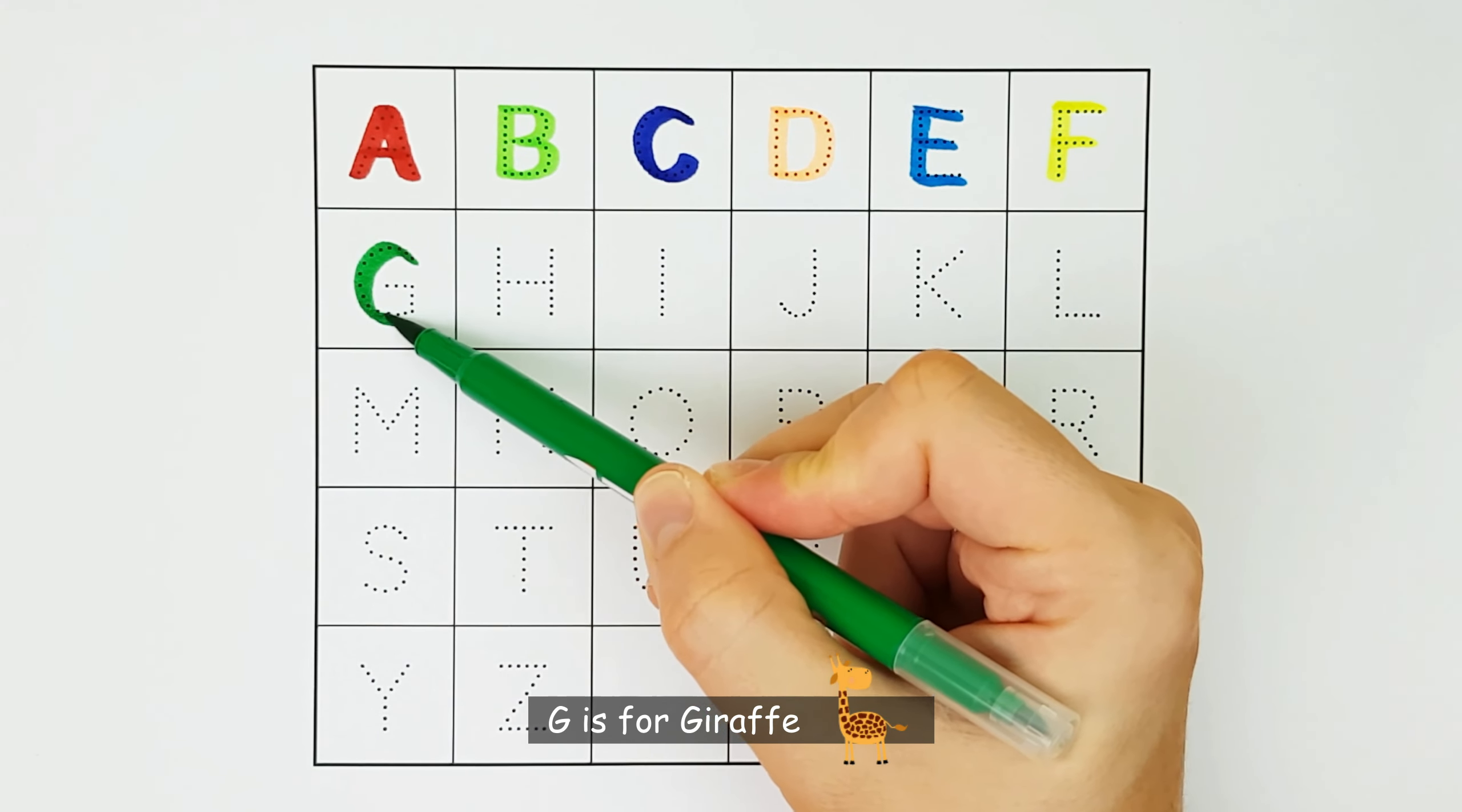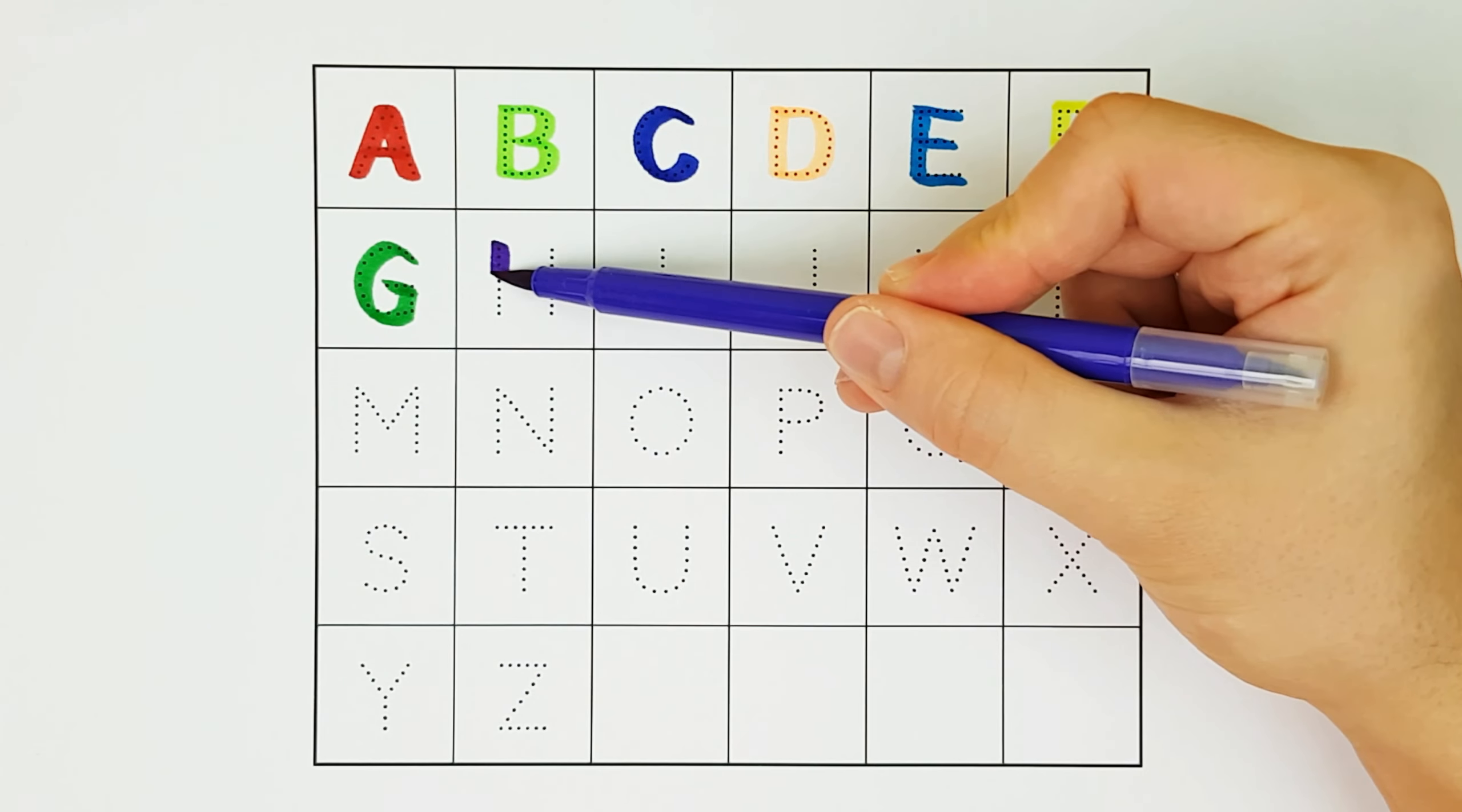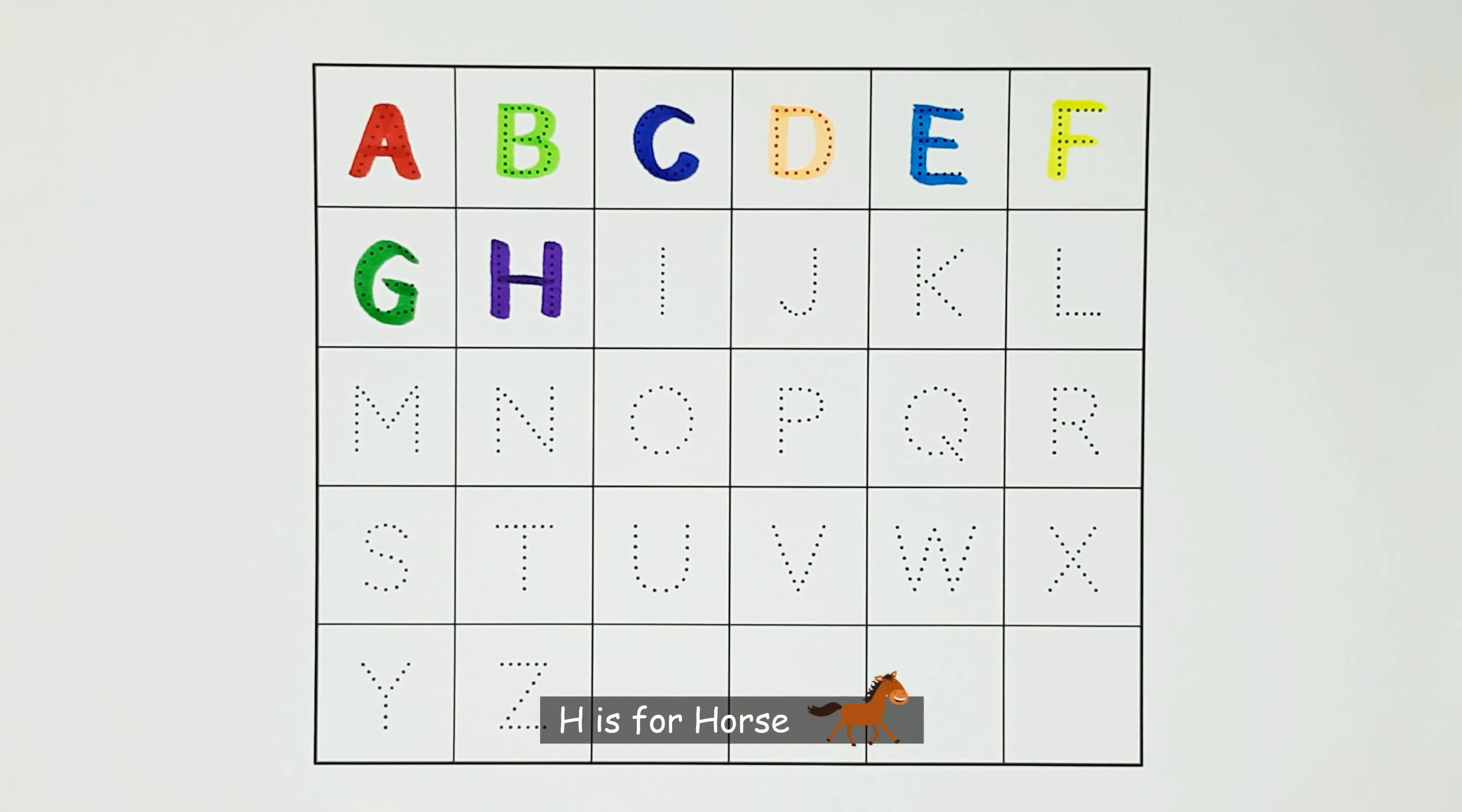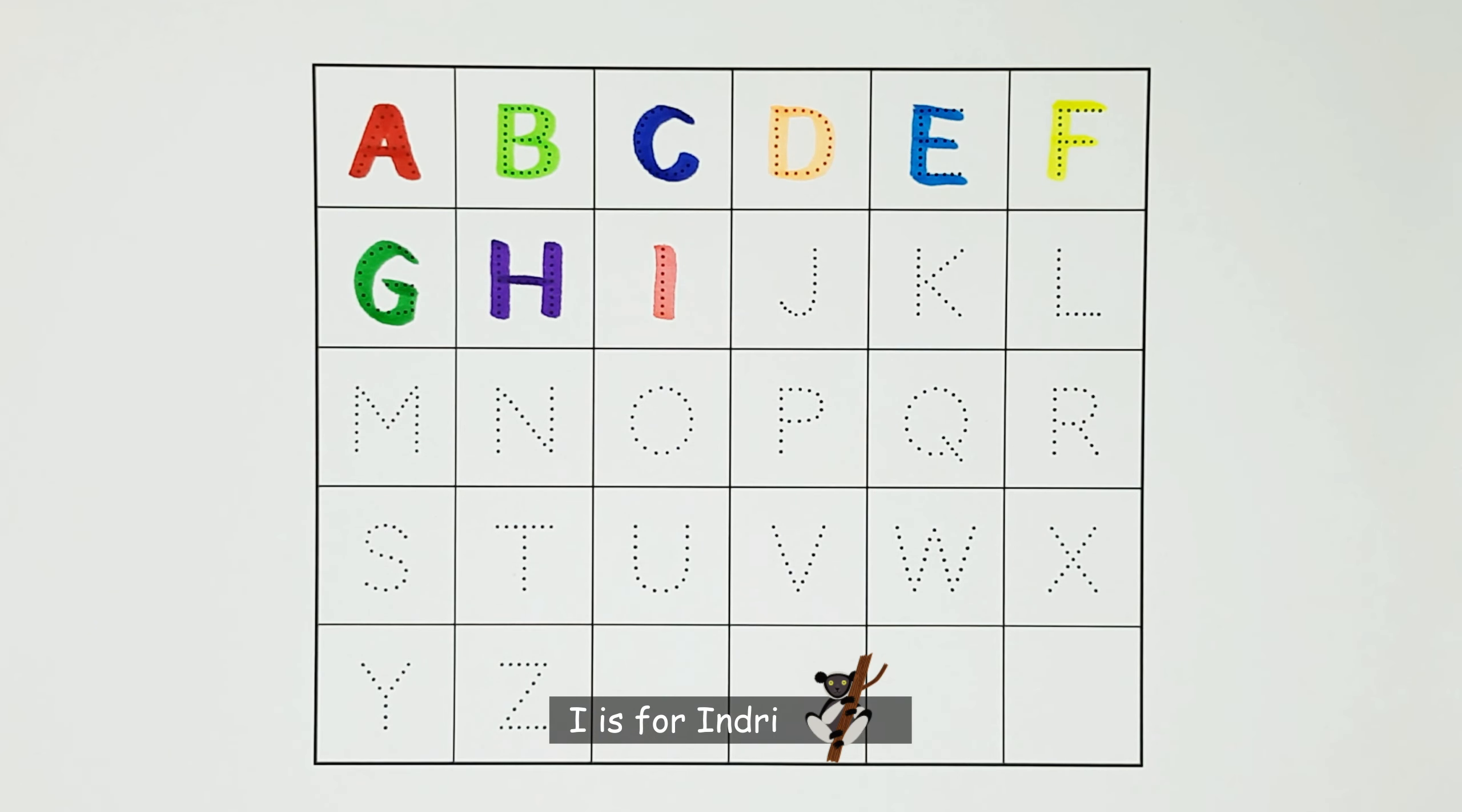G. G is for giraffe. G. H. H is for horse. H. I. I is for injury. I.